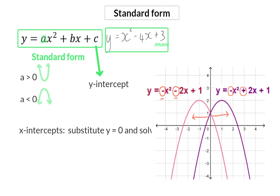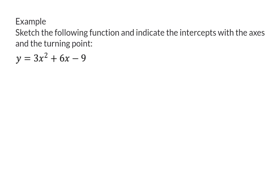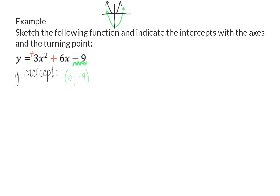Let's have a look at an example where we are given a standard form equation and need to sketch the parabola — indicating the intercepts of the axes and the turning point. We are given the equation in standard form, and as we've just seen, we can immediately say that the y-intercept will be at the coordinate (0, −9). You would start with your mother graph and move it 9 units down. Since both a and b are positive, their signs are the same, and the graph will move in the negative direction.